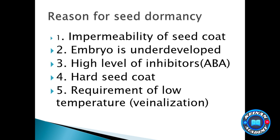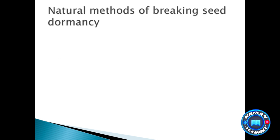Seed dormancy can be removed in two ways: naturally and artificially. The natural way may happen by chance. One natural method is through enzymes — enzymes cleave or cut the seed coat. This normally happens when a seed is eaten by an animal; the enzymes in the animal's digestive system cleave the seed coat, and when the animal excretes the seed, it is in a position to germinate.